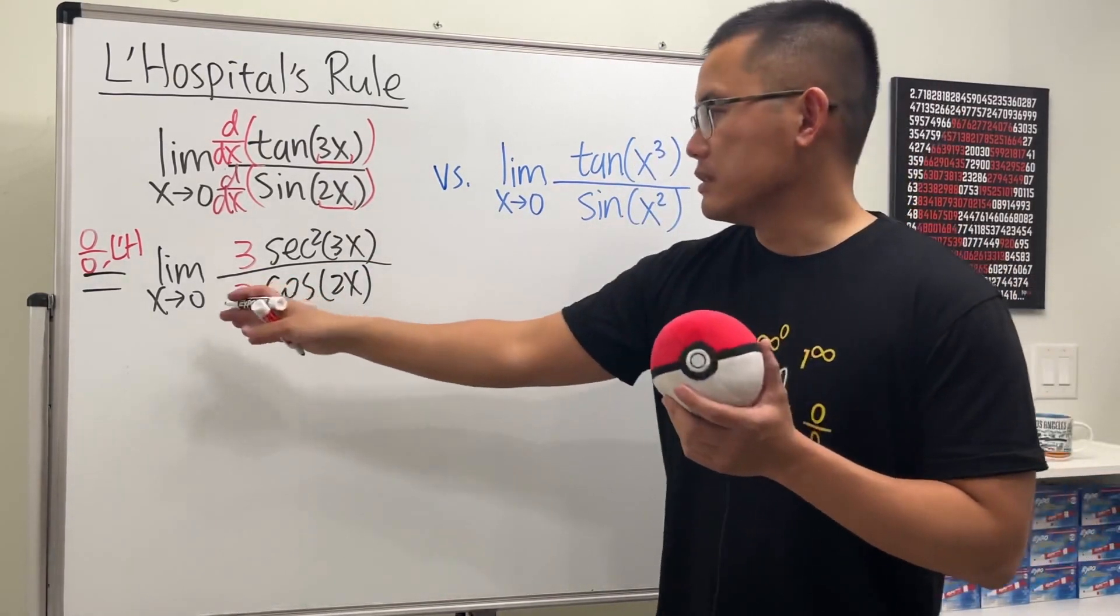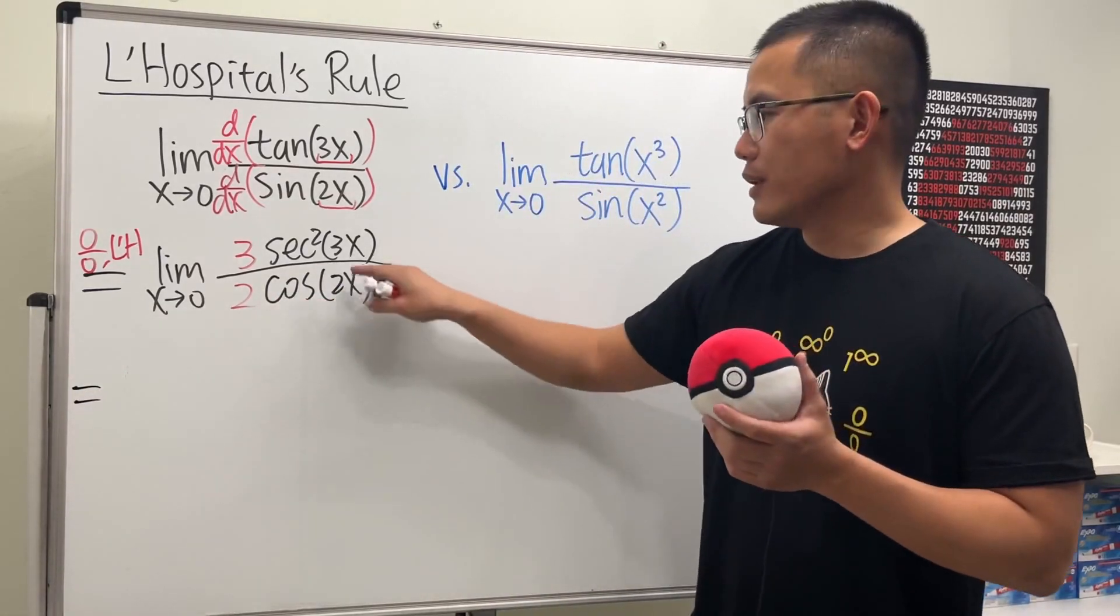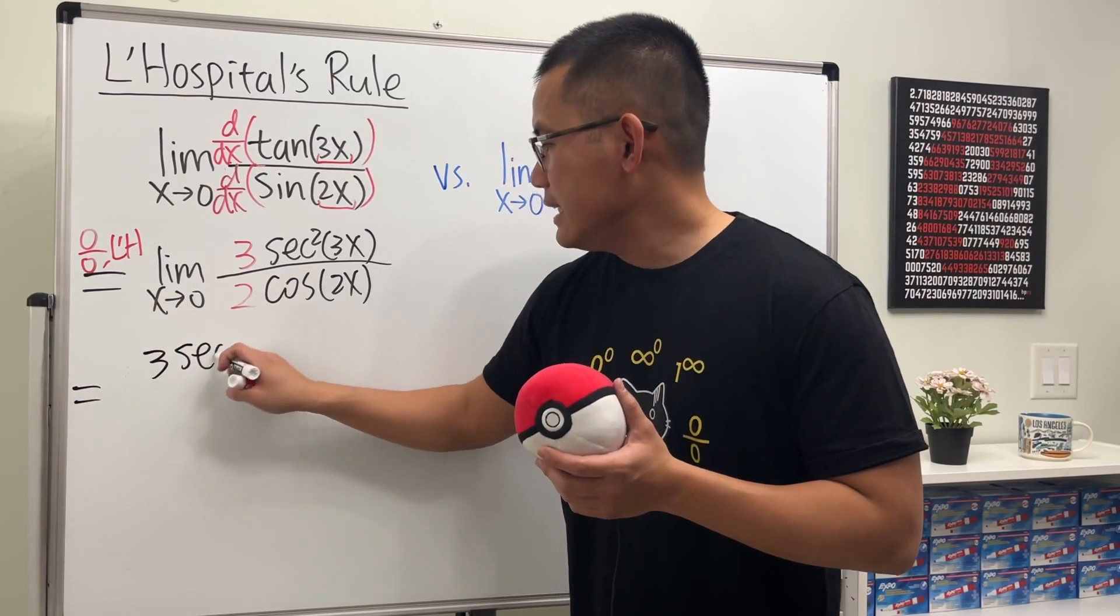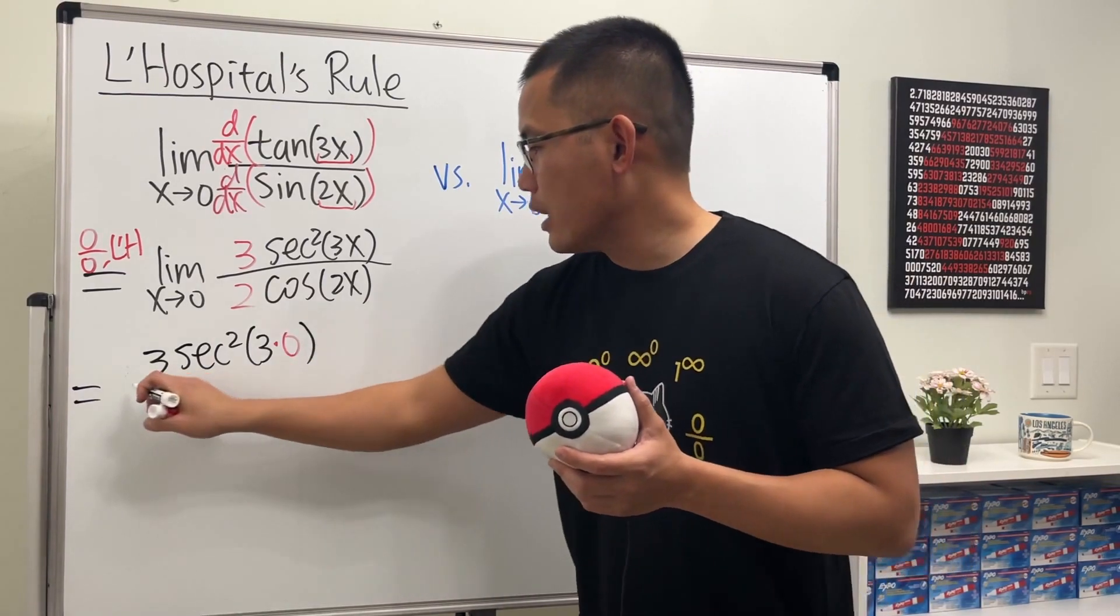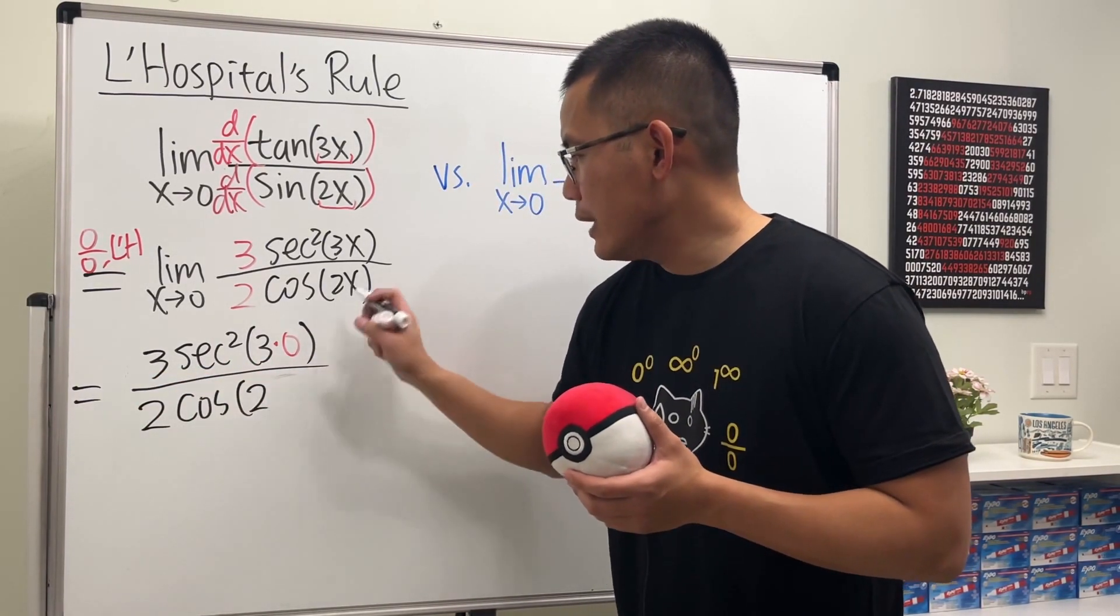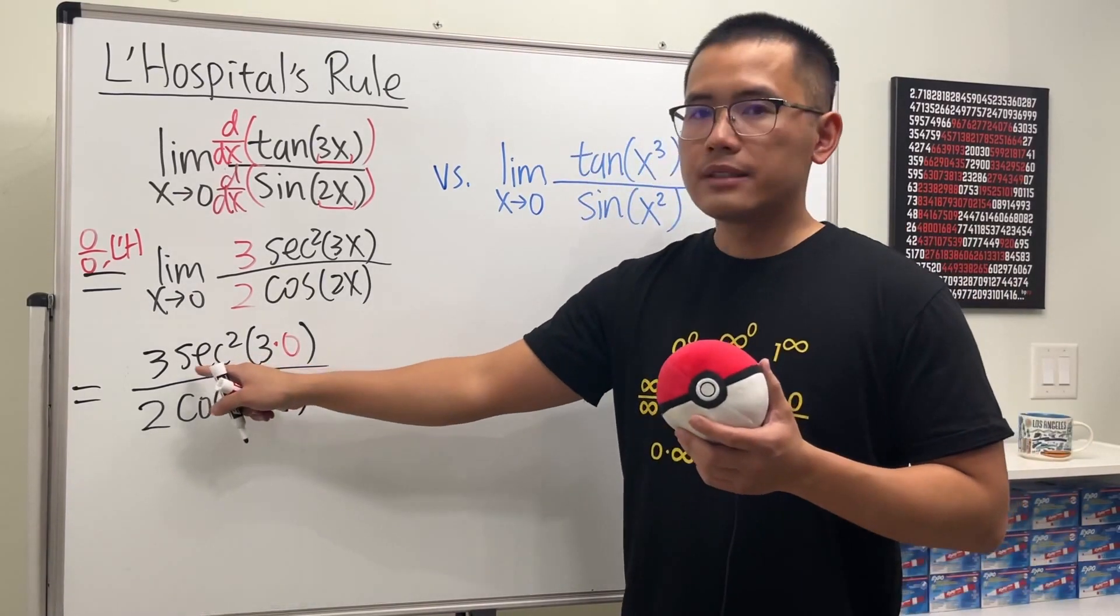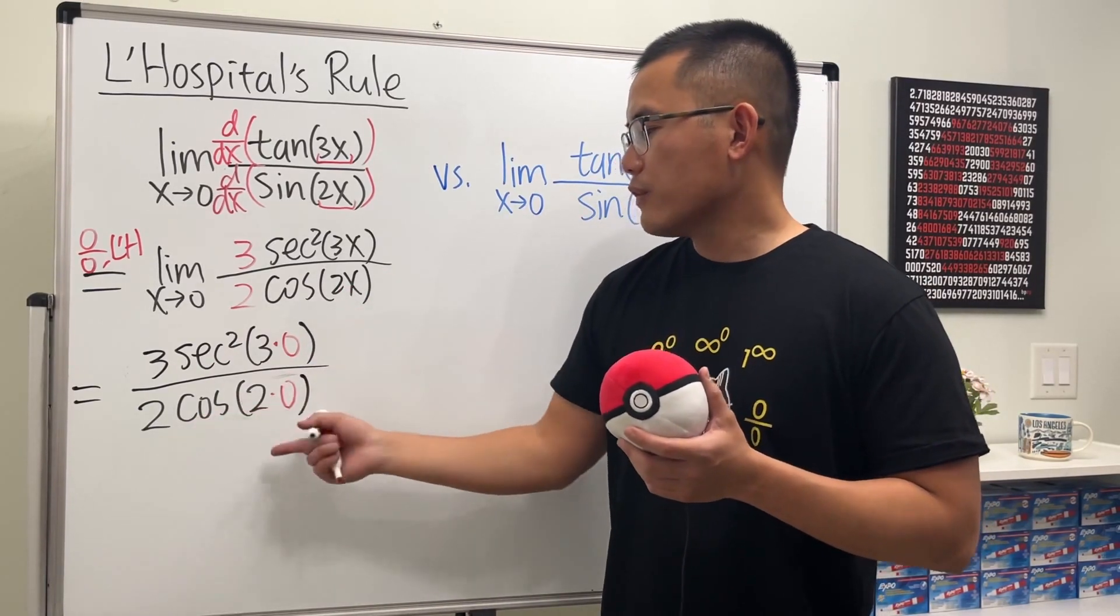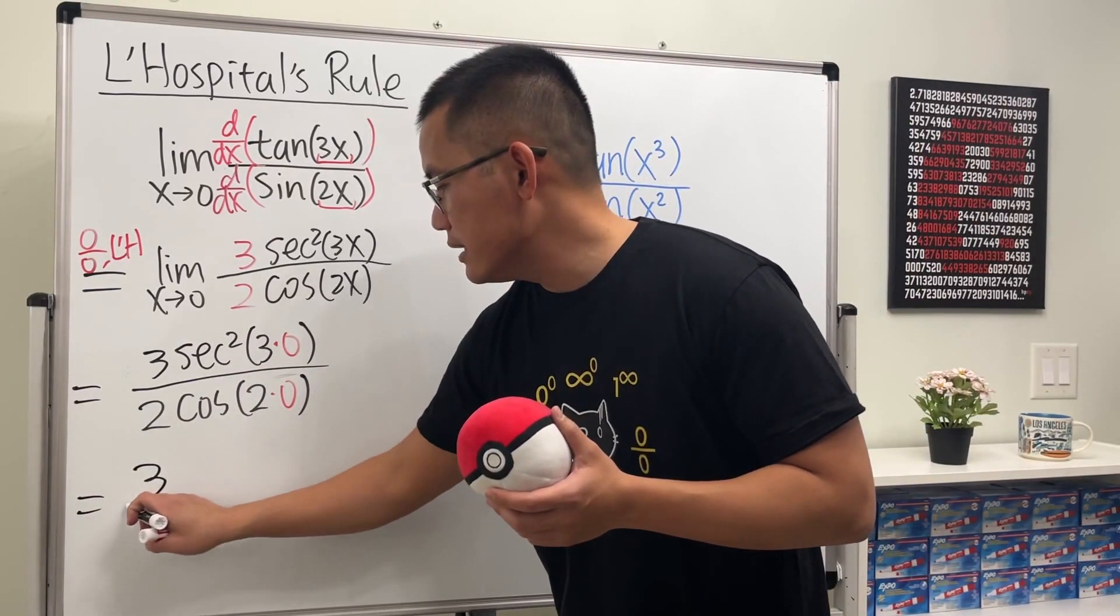Now we can plug in zero into all the x's. So let me just show you guys all the work, even though I know this is one, that's one. But here's the deal: we have three times secant squared of three times zero, and then over two times cosine of two times zero. Here, on the top, secant of zero is one, and square that, we still get one. And then cosine of zero is also one. So all in all, we just get three over two, and that will be the answer for the first one. And then we are done.